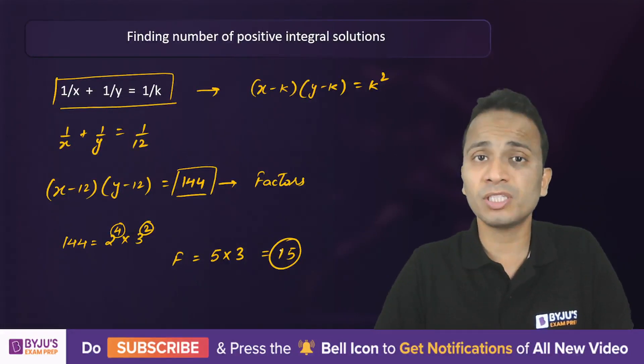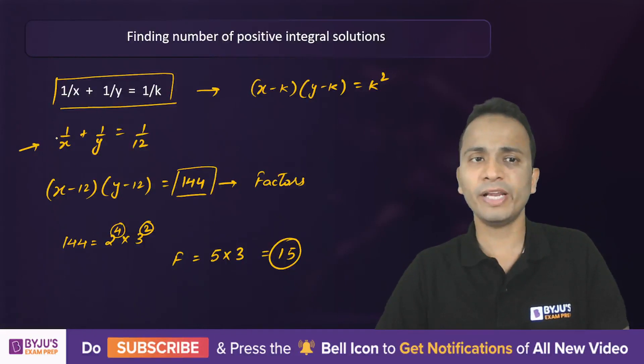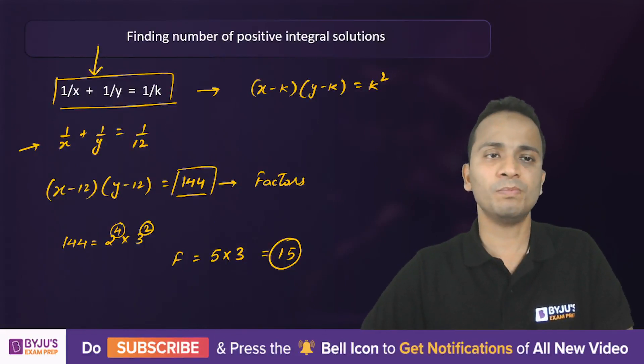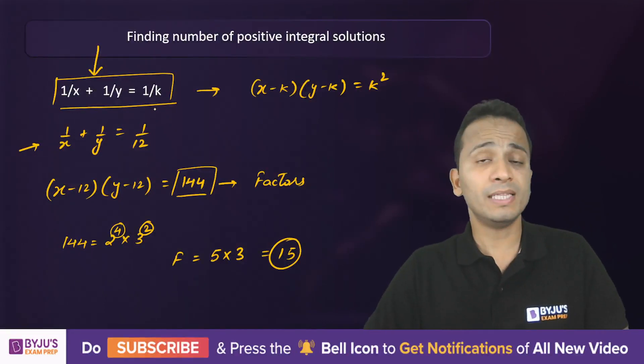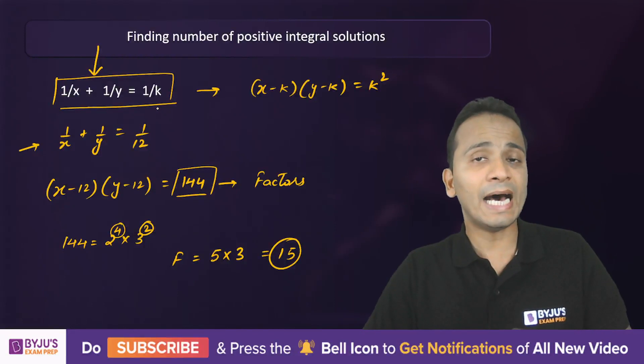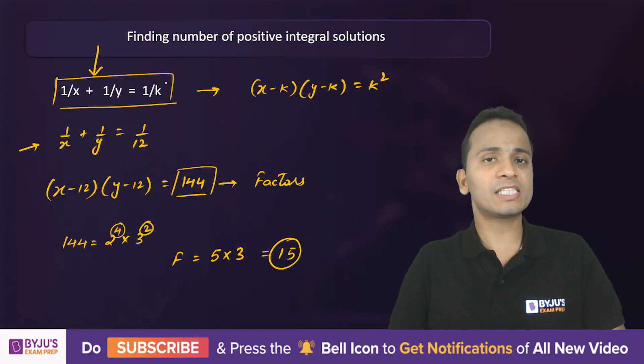So 15 is the number of positive integral solutions of the given equation. If you have any equation of this form 1/x + 1/y = 1/k, then the number of positive integral solutions will directly be the number of factors of k².